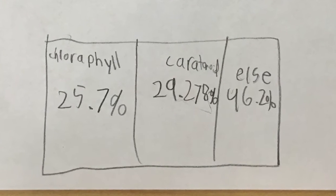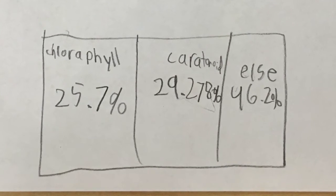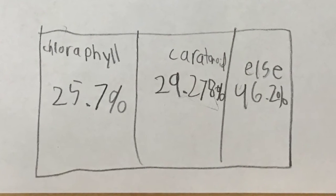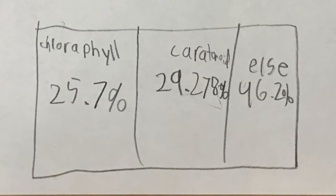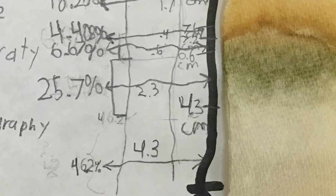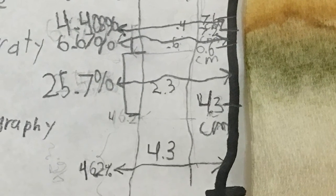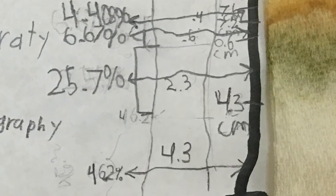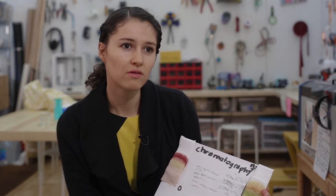We're connecting as well to why the leaves change color. And if we do chromatography and we want to understand what is the percentage of chlorophyll or carotenoids, we need to do some math to understand that percentage. So we are doing the math as well.